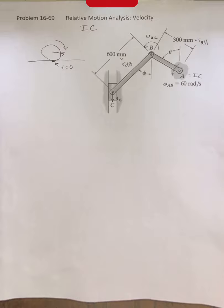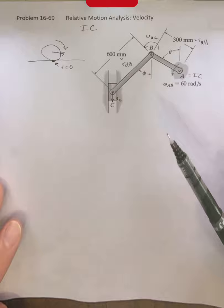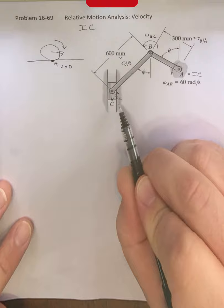Our procedure to find the IC, the instantaneous center, is going to be as follows. We have these two different points on the link BC, and each of them are going to be moving with some velocity at this instant. We already have the velocity VC. That is the speed that we're trying to find.